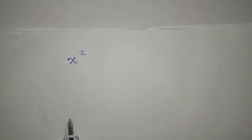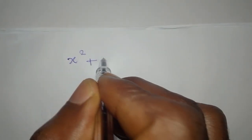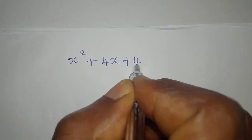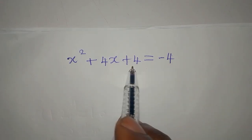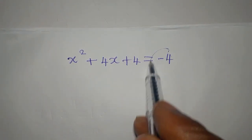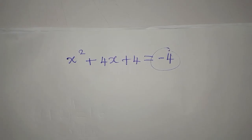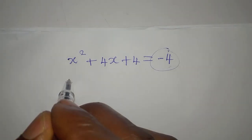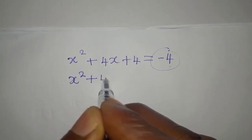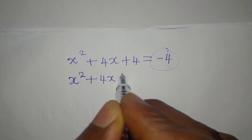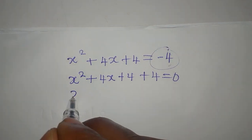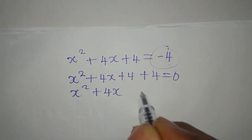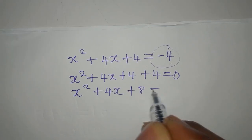Now we go back to the second equation: x squared plus 4x plus 4 equals negative 4. We bring the negative 4 to the left side, giving us x squared plus 4x plus 4 plus 4 equals 0. Then x squared plus 4x plus 8 equals 0.